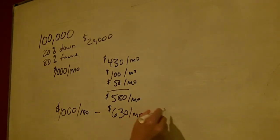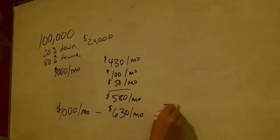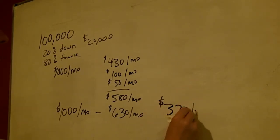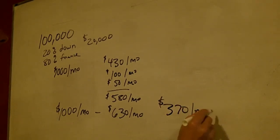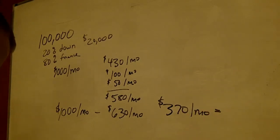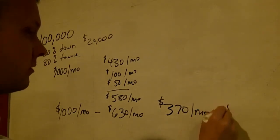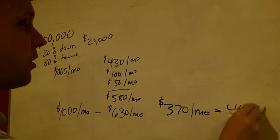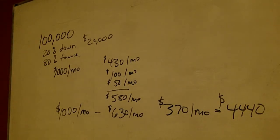So when you subtract the $630, that gives you $370 per month positive cash flow, which equals $4,440 per year profit on that rental property.